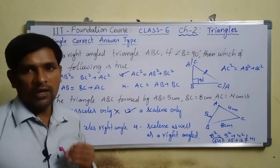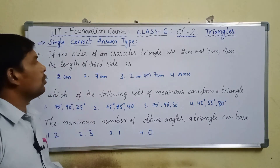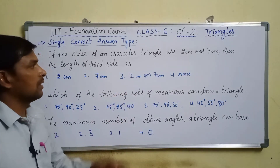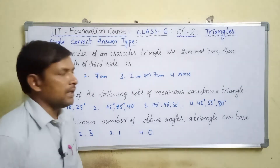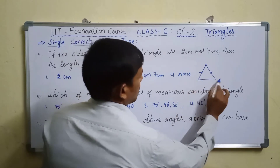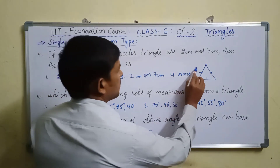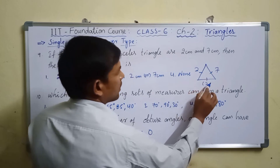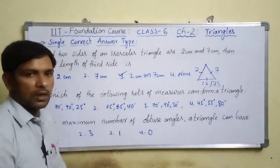Question number nine: if two sides of an isosceles triangle are 2 cm and 7 cm, then the length of the third side is? In an isosceles triangle, any two sides must be equal. So the third side should be either 2 cm or 7 cm. Option three is the correct answer.